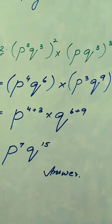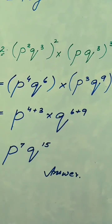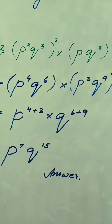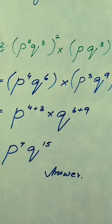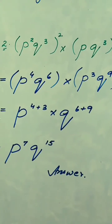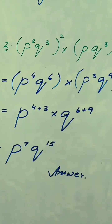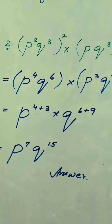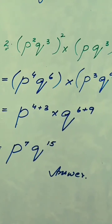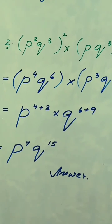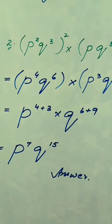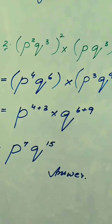Now p becomes p raised to the power 4, q raised to the power 6, multiplied by p raised to the power 3, q raised to the power 9. For the same variable, the powers are added. So it becomes p to the power 4 plus 3, multiplied by q to the power 6 plus 9. Adding up, you get p raised to the power 7 and q raised to the power 15.